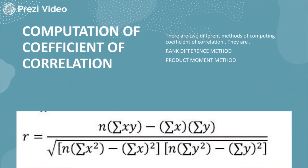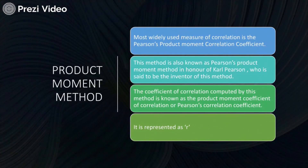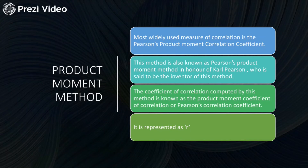Talking about the coefficient of correlation represented by R, there are several methods used — for example, the direct method, the short-cut method, and the actual detailed correlation coefficient method. They are categorized into two types: the rank difference method and the product moment method. We are more concerned with the product moment method, also known as the Pearson's product moment correlation coefficient, named in honor of scientist Carl Pearson, who is said to be the inventor of this method.